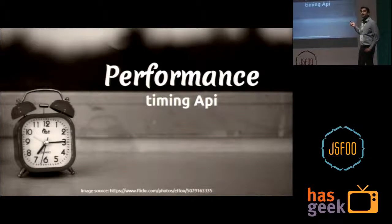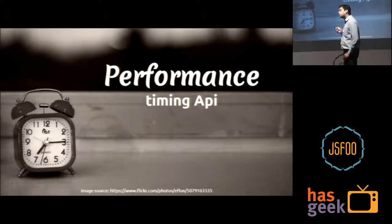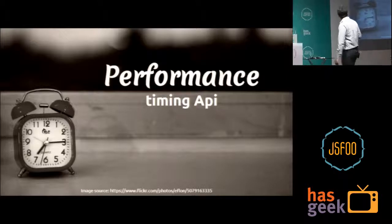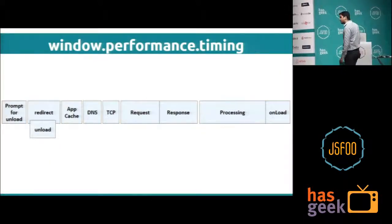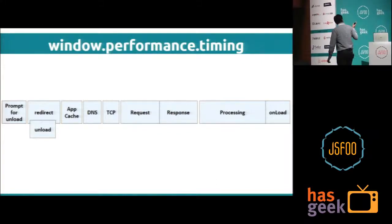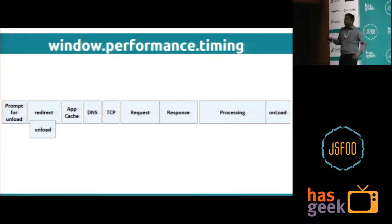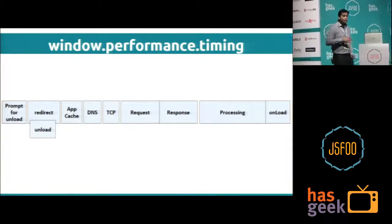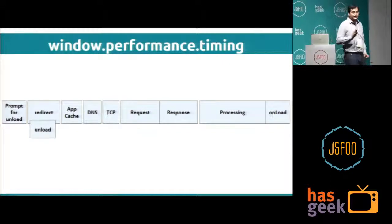Another alternative method is the Performance Timing API. It is a new spec that modern browsers support, and IE also supports it. With this API, we can get a more detailed picture of timings — including app cache hitting, DNS resolution, TCP request, request-response, processing, and onload events — giving highly precise timings.